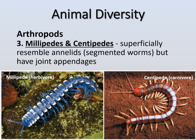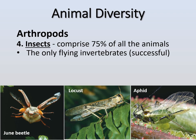Our next group are millipedes and centipedes. They look similar to annelids because they're segmented, but they have jointed appendages and little legs. Millipedes have paired legs per body segment, whereas centipedes have just one pair of legs per body segment. Most millipedes are herbivores, whereas centipedes are carnivores, getting their energy from different sources.